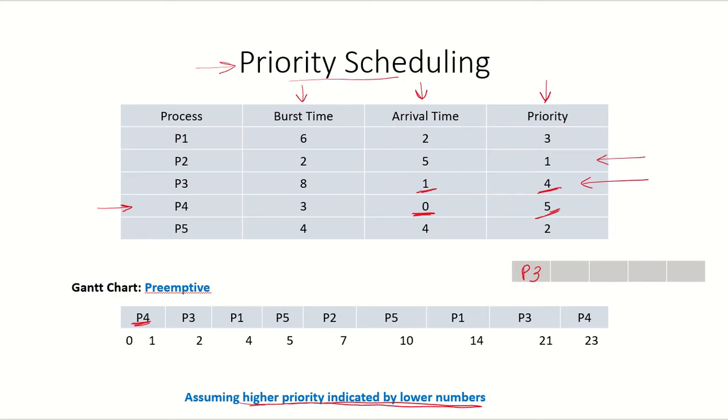So since this is a preemptive algorithm, P3 will preempt P4 and now P3 will be allocated the CPU and P4 will come in the ready queue. However, P4 has already run for one time unit, so only two time units of P4 are left.